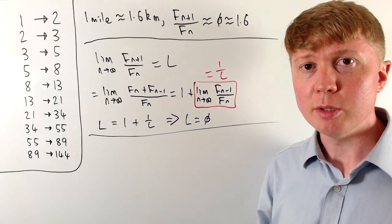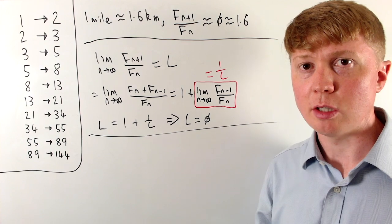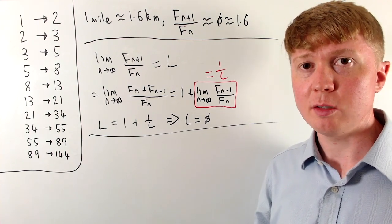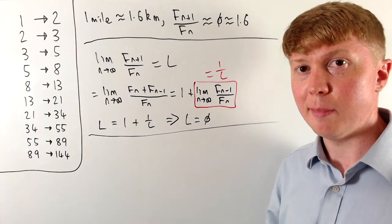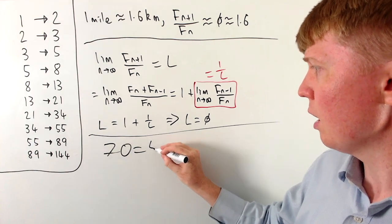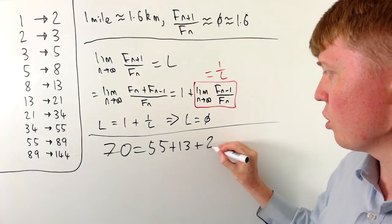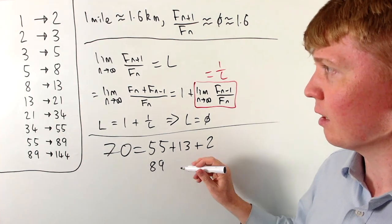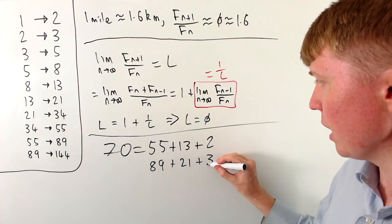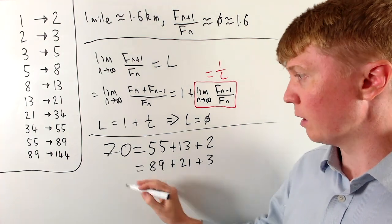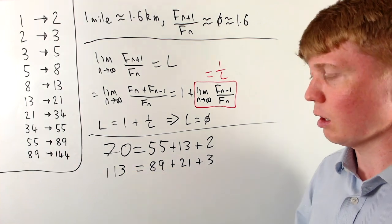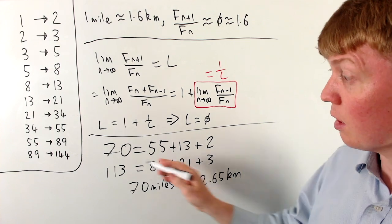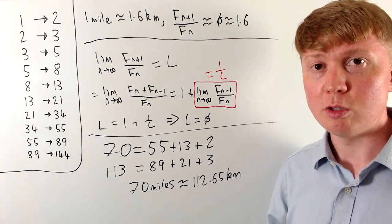This result is great if you want to convert between Fibonacci numbers of miles or kilometers. But what if you want to convert any integer number of miles? We already know any positive integer can be expressed as a sum of Fibonacci numbers. So to convert 70 miles, we write 70 as 55 plus 13 plus 2, then take the next Fibonacci number after each: 55 becomes 89, 13 becomes 21, and 2 becomes 3. This gives us approximately 89 plus 21 plus 3 equals 113 kilometers. And indeed, 70 miles is around 112.65 kilometers — a pretty good approximation.